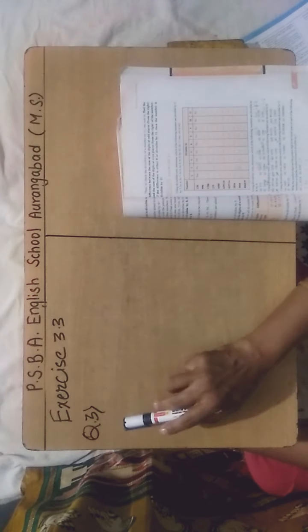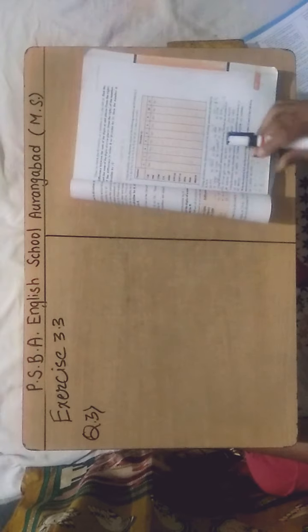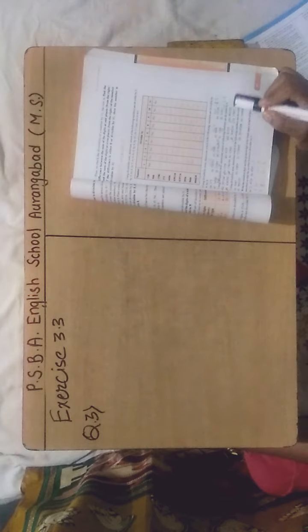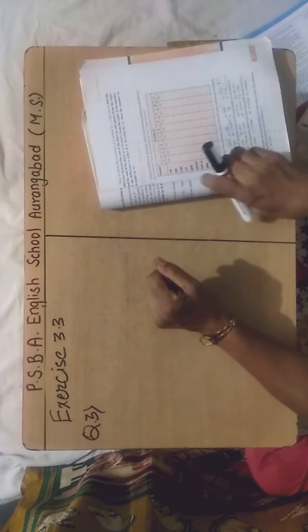Now we will start question number 3, exercise 3.3. The question is: using divisibility test, determine which of the following numbers are divisible by 6. Students, you have to remember that if the number is divisible by both 2 and 3, then that number will be divisible by 6. This divisibility test we have to use here.